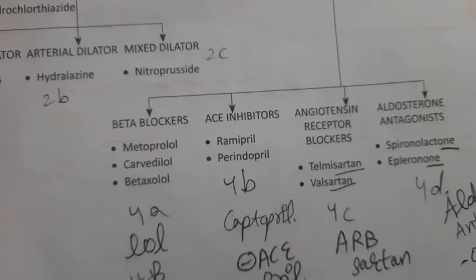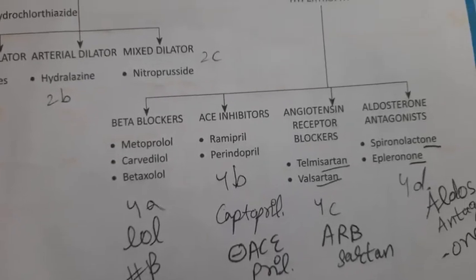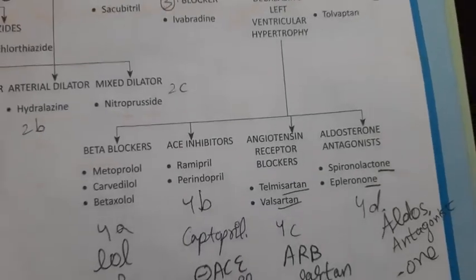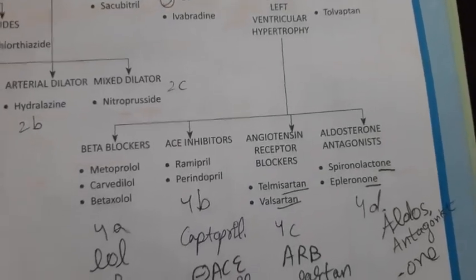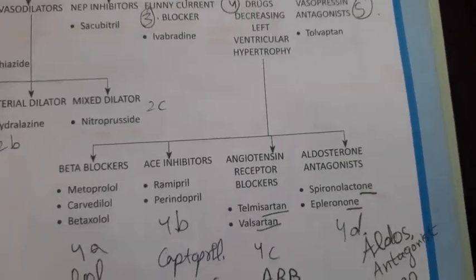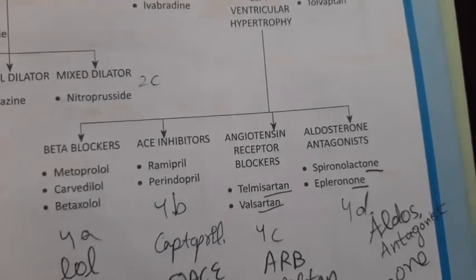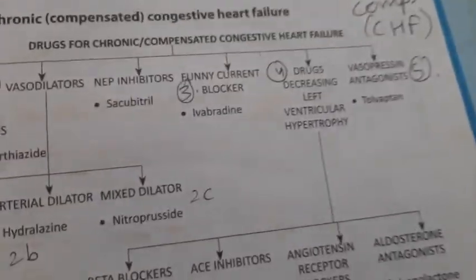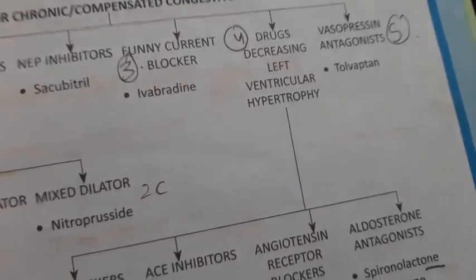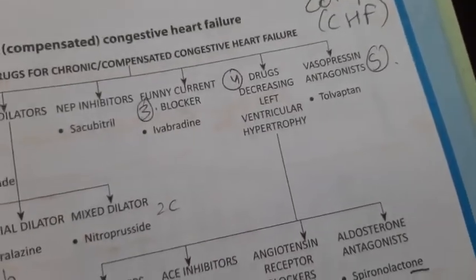ACE inhibitors — for example, ramipril and perindopril. Angiotensin receptor blockers include telmisartan and valsartan. Aldosterone antagonists include spironolactone and eplerenone. Lastly, vasopressin antagonists — for example, tolvaptan.